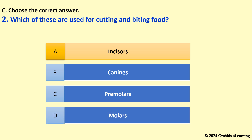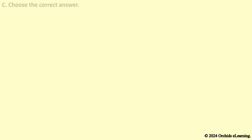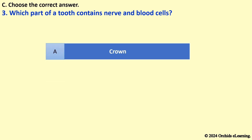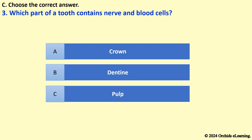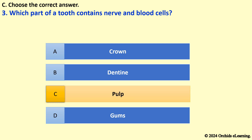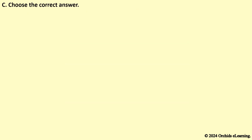Which part of a tooth contains nerve and blood cells? The answer is C — Pulp. Which of these holds the teeth in place? The answer is B — Gums.